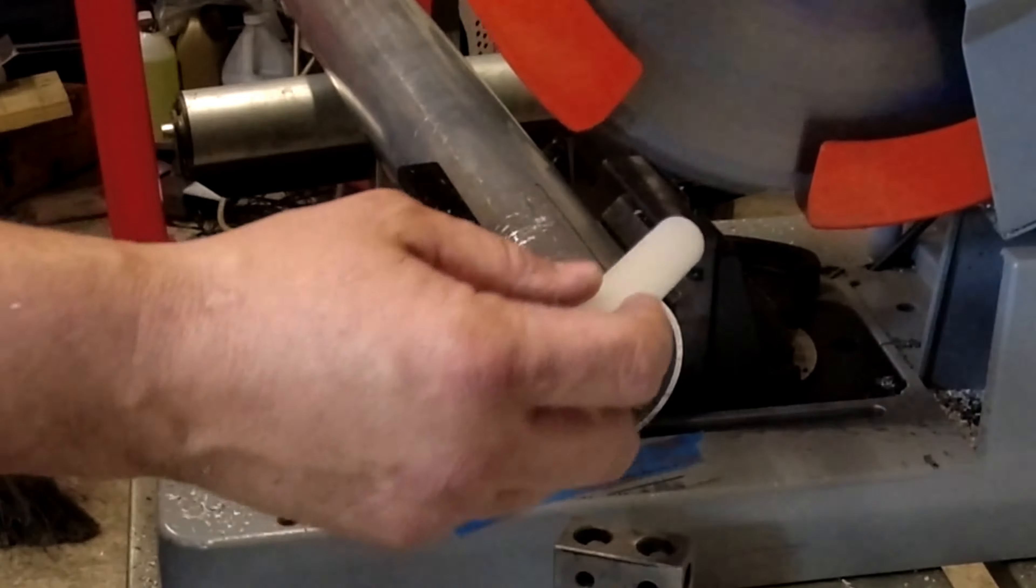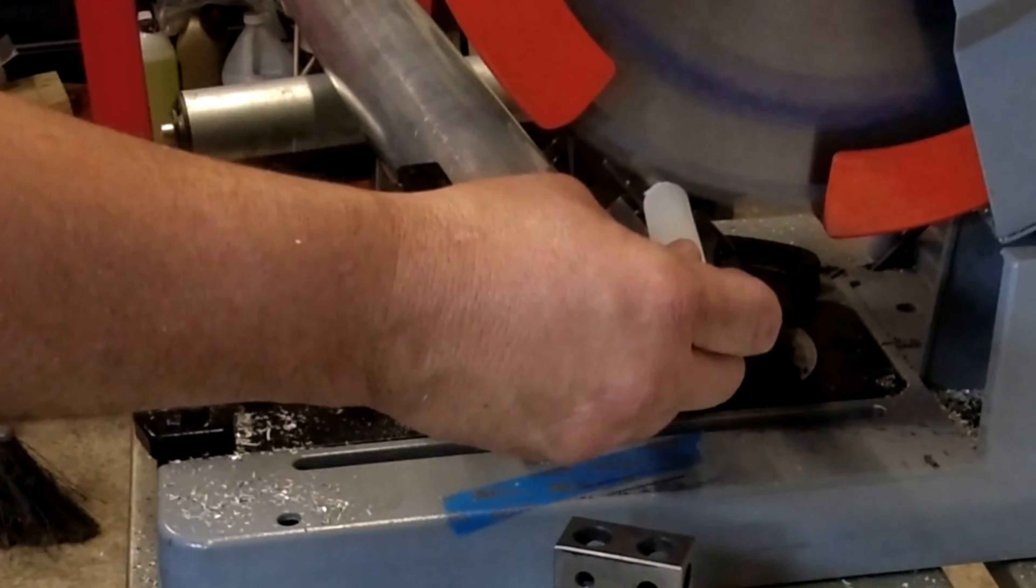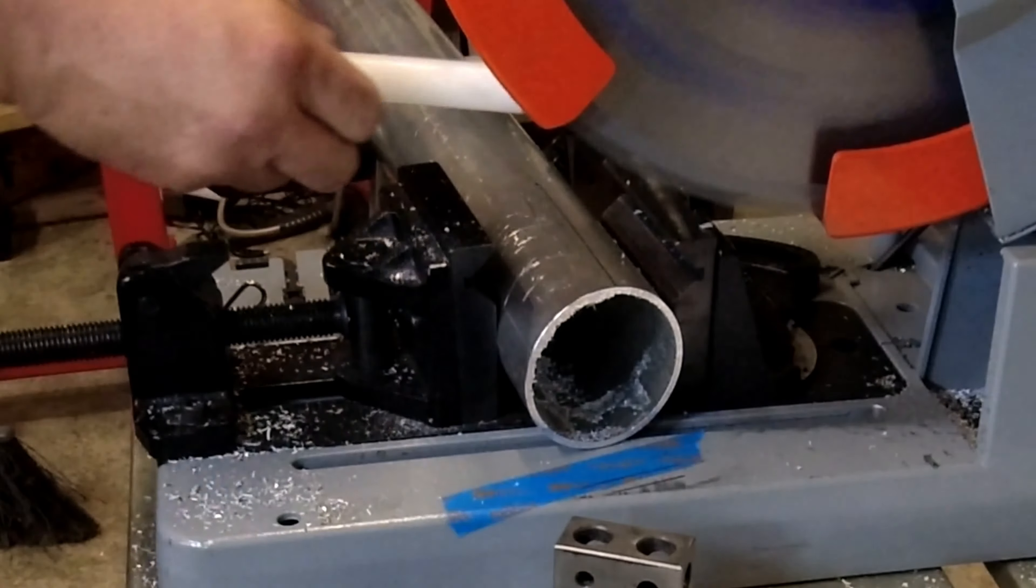So one thing that makes a great lubricant if you're cutting aluminum is just basic old candle wax.